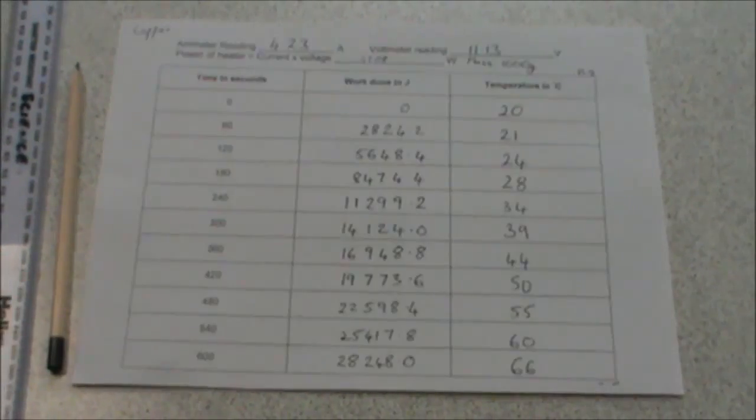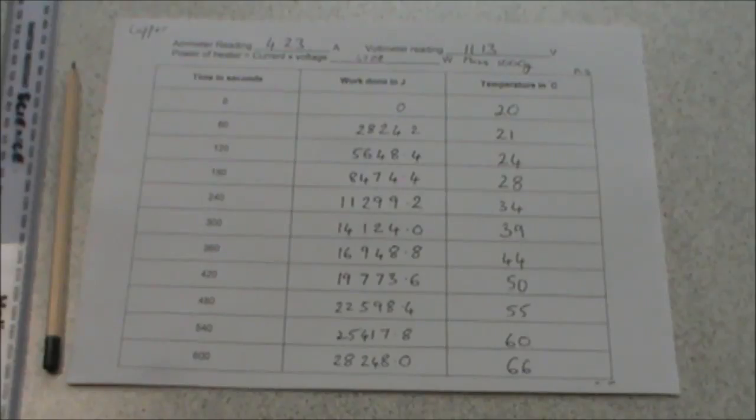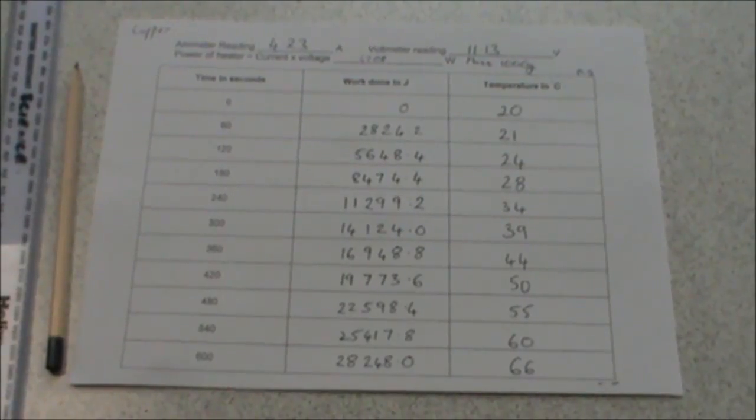You will need a sharp pencil and a ruler. These are the work done calculations for the copper block, with a mass of 1000 grams, an ammeter reading of 4.23 amps, and a voltmeter reading of 11.13 volts. What I'm going to do is I'm going to plot these on my graph, work done in joules on the x-axis, temperature in degrees C on the y-axis.